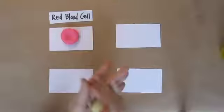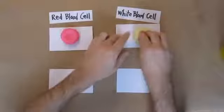Next up, white blood cells. White blood cells are actually much bigger than red blood cells. They're also very important.